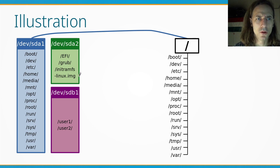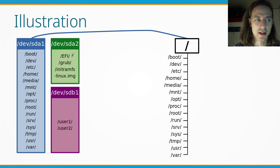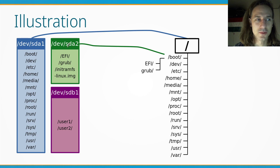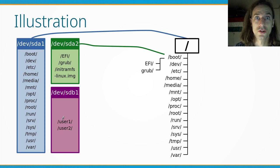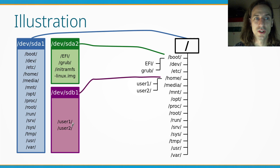In this example, we have all the important things for booting in a separate partition — the EFI system partition containing EFI-related stuff and the GRUB bootloader — so we mount that partition as the /boot directory. Everything on that partition will be under /boot. We also have user files on another partition, so we mount that at /home, meaning everything under /home comes from that partition.